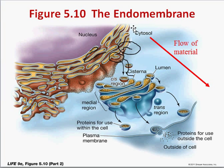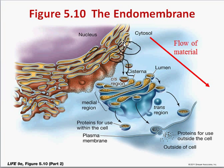The endomembrane system is a series of membrane-connected structures, either physically connected or connected via vesicles. Information and material flow from the nuclear envelope to the rough ER, then to the Golgi, then to the plasma membrane or somewhere else inside the cell.